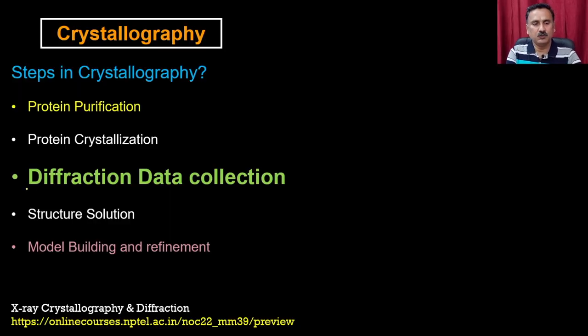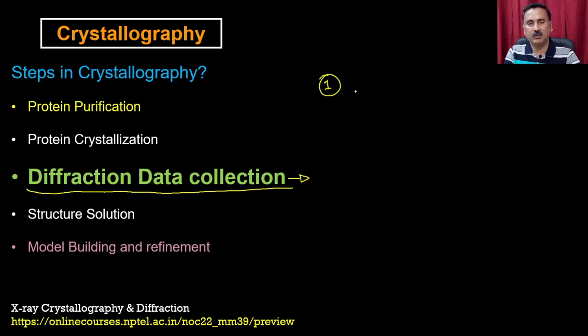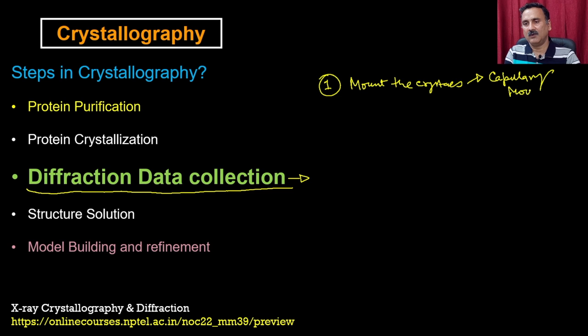So what we were discussing, we were discussing about the crystallizations. So in the next step, you are actually going to use these crystals for diffraction data collection. Diffraction data collection is a multi-step process. In the first step, within the diffraction data collections, you are going to mount the crystals. The mounting of the crystals can be done by two methods. One is called as the capillary mounting and the second one is called as loop mounting.